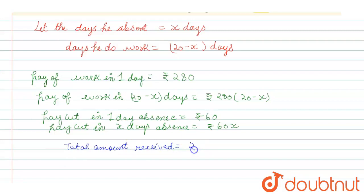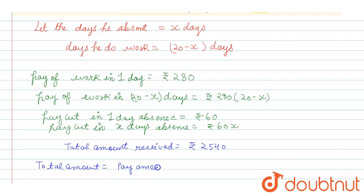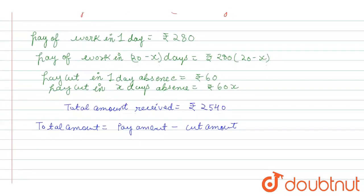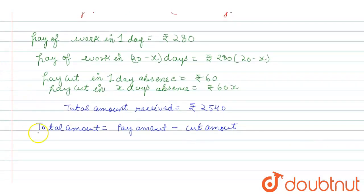The total amount received is equal to rupees 2540. This total amount will be equal to pay amount minus cut amount. So: 280 into (20 minus x) minus 60x equals 2540.